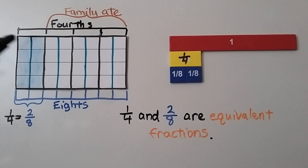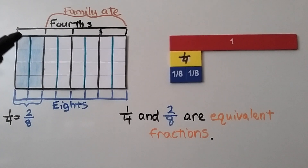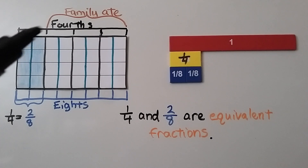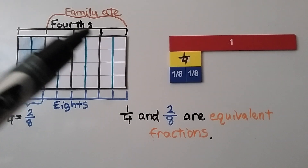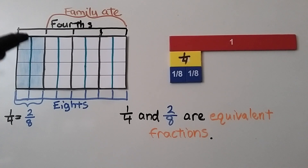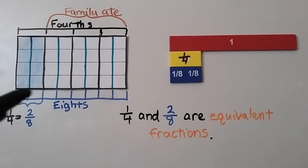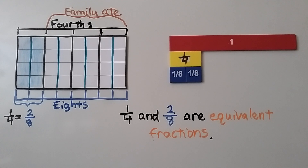She originally cut the pan into fourths, so the pieces were this wide. This is the part the family ate. Then she had one-fourth left and she split it into two smaller, equal-sized pieces. Her one-fourth became two-eighths. One-fourth is equal to two-eighths. One-fourth and two-eighths are equivalent fractions.